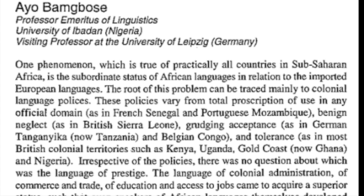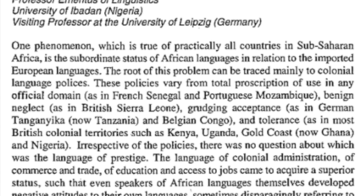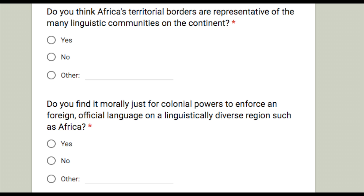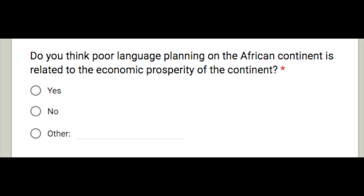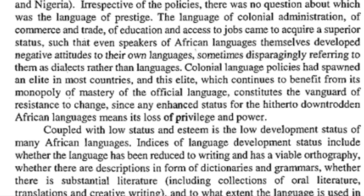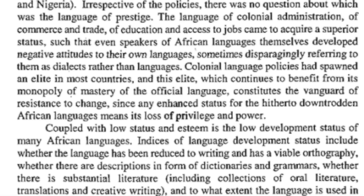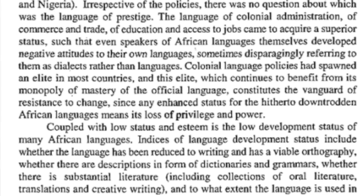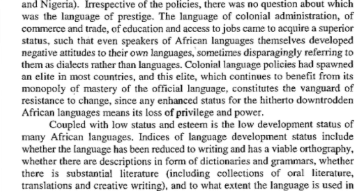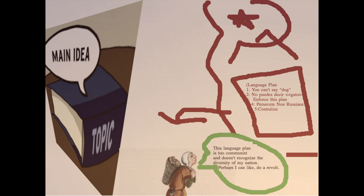Thanks to Spain, Italy, France, Britain, Germany, Portugal, and Belgium — they have come to Ethiopia. One phenomenon which is true of practically all countries in Sub-Saharan Africa is the subordinate status of African languages in relation to the imported European languages. The root of this problem can be traced mainly to colonial language policies. Coupled with low status and esteem is the low development status of many African languages. Indices of language development status include whether the language has been reduced to writing and has a viable orthography, whether there are descriptions in forms of dictionaries and grammars, whether there is substantial literature in the language, and to what extent the language is used.